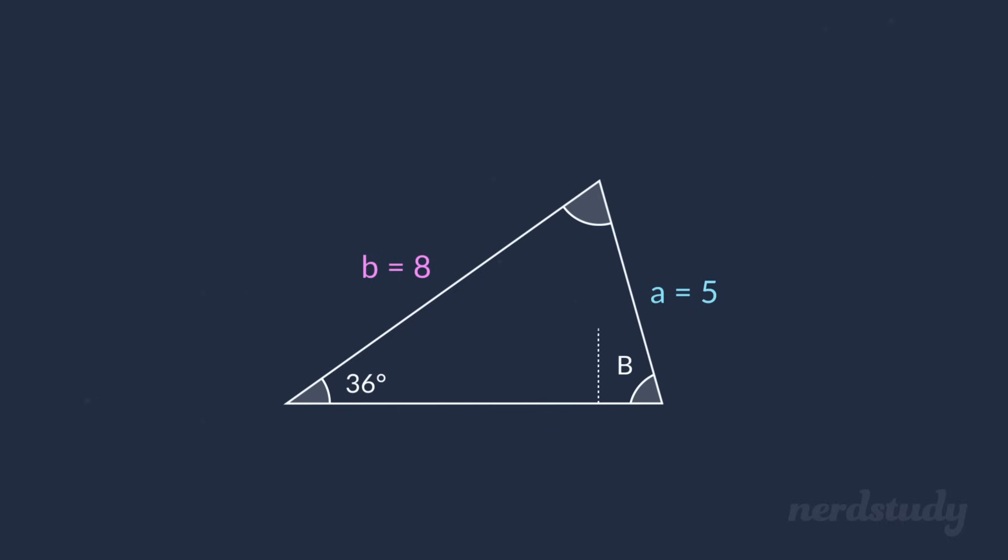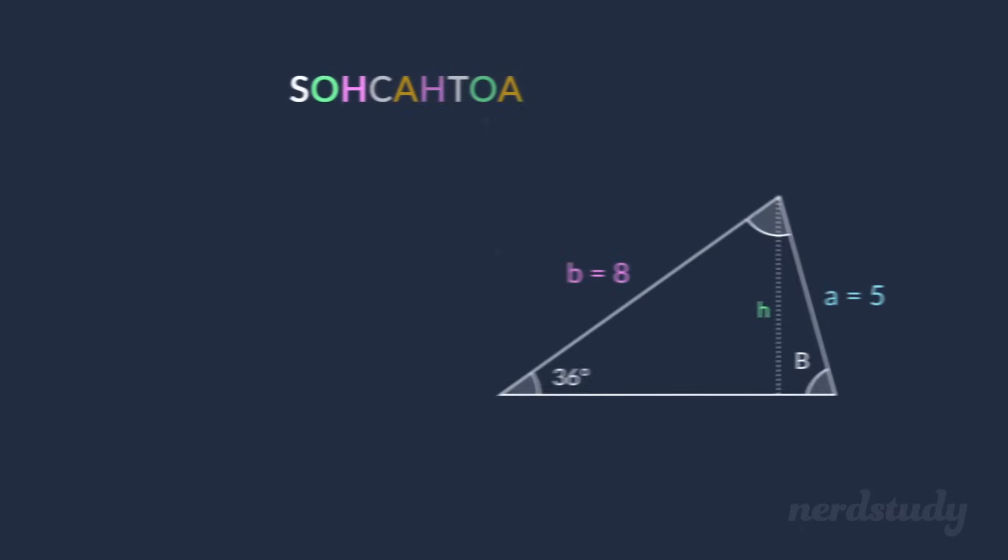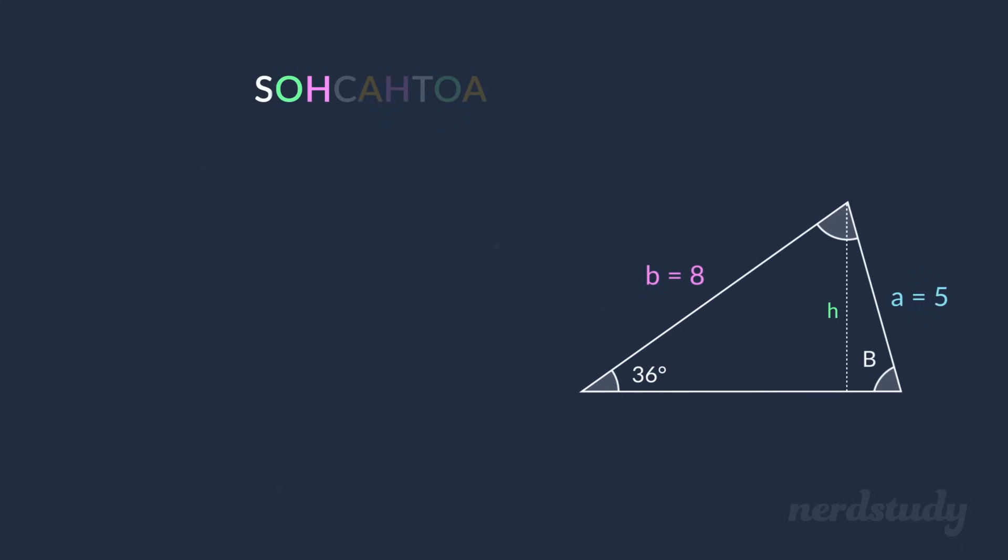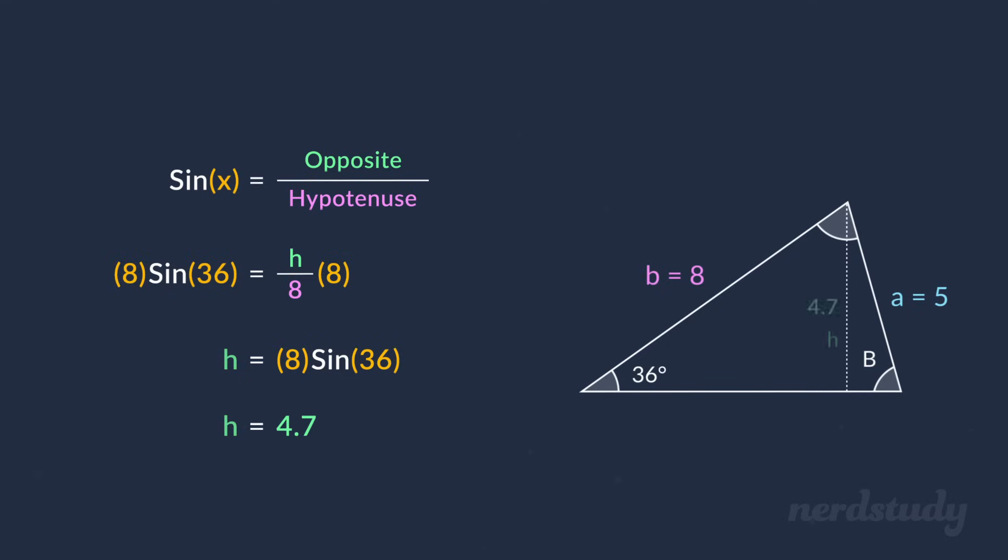So here we identify our height, and use SOH CAH TOA to solve for h. Using the SOH in this situation, we know we can do sine of x equals opposite over hypotenuse, which gives us sine of 36 equals h over 8. Multiplying both sides by 8 gives us this, so let's just rearrange. And computing for h gives us a final value of 4.7 for the height of this triangle.